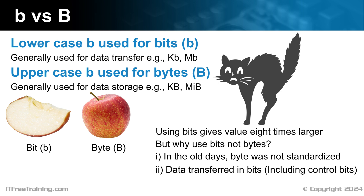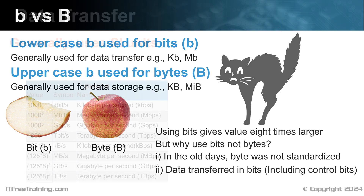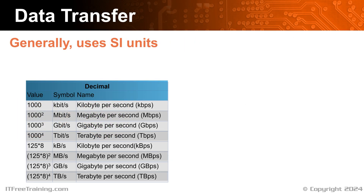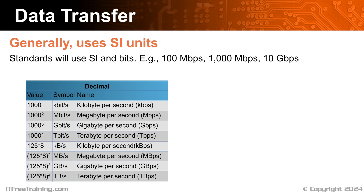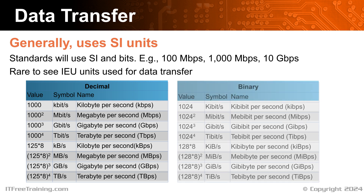When you are talking about data storage, you are generally only looking at how much data there is and not any overheads used to store it. Thus, bytes are a good unit to measure it in. Let's now have a look at data transfer in more detail. When measuring data transfer generally, SI units will be used - that is, multiples of 1000. When defining data standards generally, the SI standard will normally be used and it will be defined in bits. For example, Ethernet networks use speeds like 100 Mbps. In most cases, when describing data transfers, bits will be used rather than bytes. It is rare to use IEC units for data transfer, but it is possible.